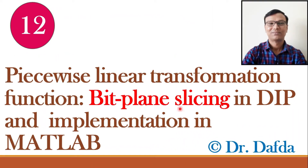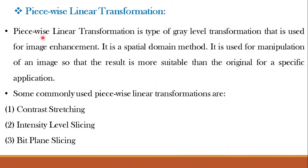Bit plane slicing means we will be slicing different bit planes from an image. An image is made up of 8 bit planes and if we slice each bit plane separately, we can have different applications from bit plane slicing. A piecewise linear transformation function is linear in different pieces or parts. It is a special domain method — we are performing operations on the image plane itself — used for image manipulation. We have already studied contrast stretching and intensity or grey level slicing in previous video classes, and in this class we will study bit plane slicing.